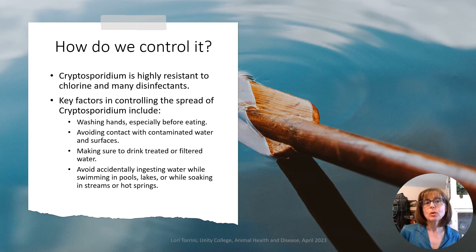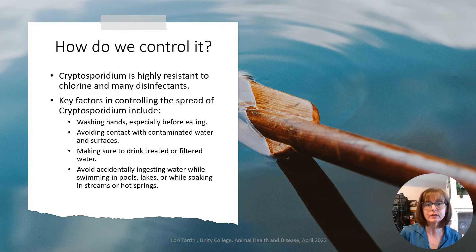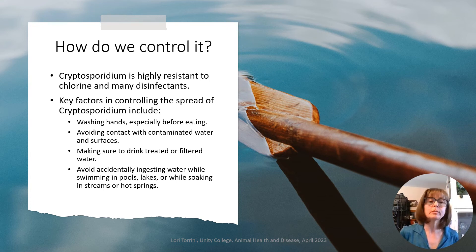How do we control it? Crypto is highly resistant to chlorine and many disinfectants, which makes it a pain to try to get rid of in the environment and hard to control. Key factors in controlling the spread of crypto include washing hands especially before eating, avoiding contact with contaminated water and surfaces, making sure to drink treated or filtered water, and avoiding accidentally ingesting water while swimming in pools, lakes, or soaking in streams or hot springs.